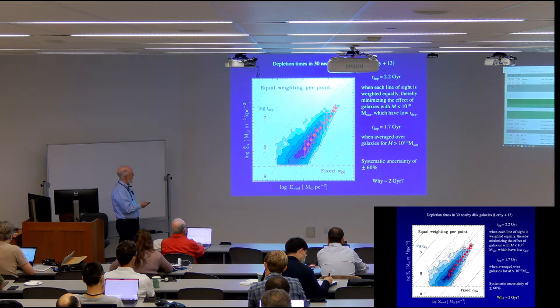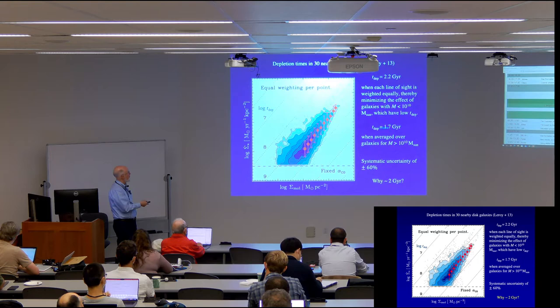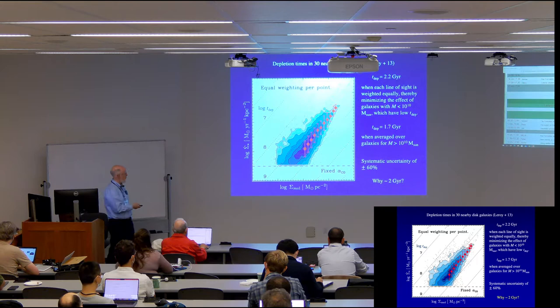But there was no mass dependence in between. That is, once you were in the large group, there was no change. When he did it by averaging over the galaxies, looking at these more massive galaxies, then he got a somewhat different number. But basically, that's around two giga years. And they pointed out there was a substantial uncertainty with this. But you could ask, why is it two billion years? What is causing that?